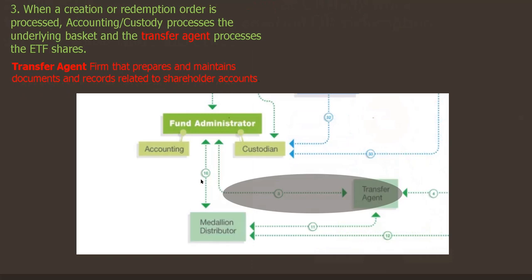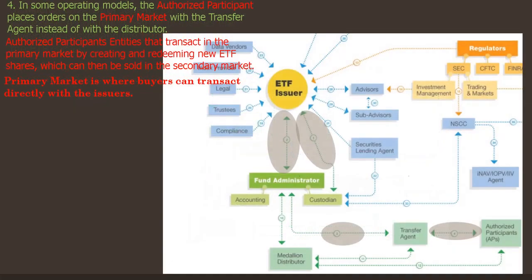Step three: when a creation or redemption order is processed, accounting or custody processes the underlying basket and the transfer agent processes the ETF shares. Step four: in some operating models, the authorized participant places orders in the primary market with the transfer agent instead of with the distributor. The fund administrator can either skip to step 10 and go straight to the distributor, or go through the transfer agent who then goes to the authorized participant — bypassing that step altogether or going to the transfer agent first and then to the primary market.